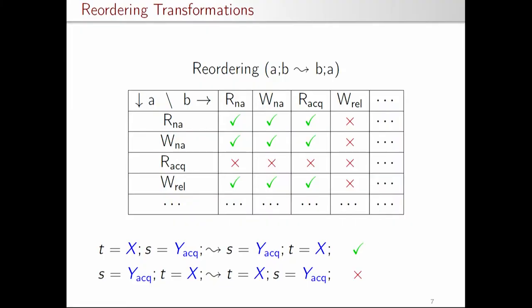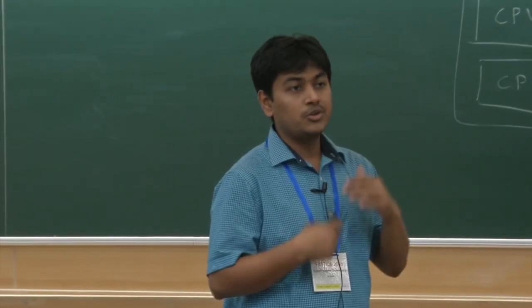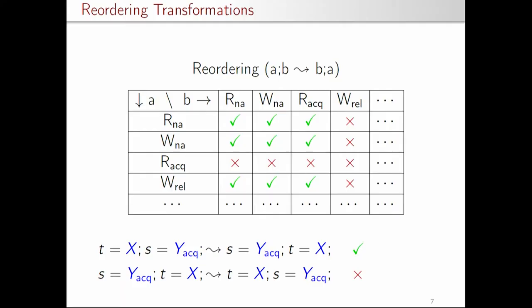To address the first question, we studied the C/C++ relaxed memory model, and in a POPL 2015 paper we came up with a set of transformations allowed under the C/C++11 memory model. We specifically looked at two types: reordering transformations, which improve temporal or spatial locality, and access deletion transformations performed by constant propagation, common sub-expression elimination, and so on. For example, if there is a write_release, no operations before it can move after it; for read_acquire, no access after it can be moved before it; and non-atomic accesses can be freely reordered.